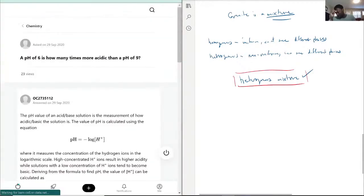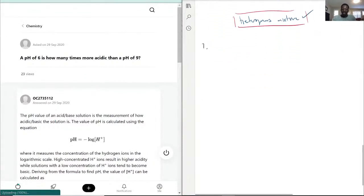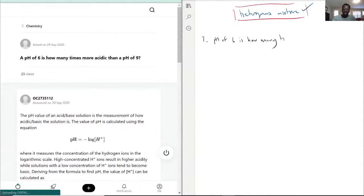Let's move on now to question number seven. This one's asking us: a pH of six is how many times more acidic than a pH of nine?